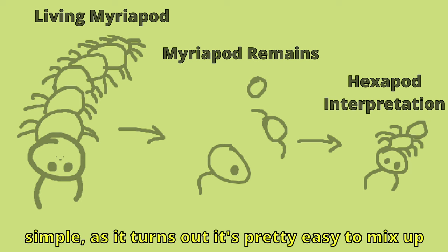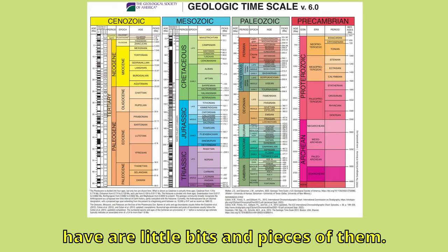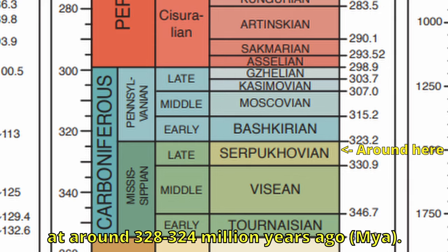If we were to keep things simple and certain, we could define the first appearance datum as the rough time of arrival for insect wings as a trait. I'll go into more detail later, but even this is not so simple, as it turns out it's pretty easy to mix up classifications among early arthropods when all you have are little bits and pieces of them. Currently, we have certain fossil evidence of Pterygota from the Carboniferous at around 328 to 324 million years ago.